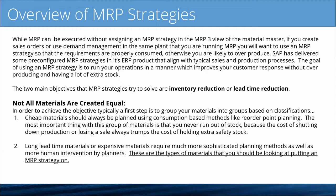Before we get started, what materials need an MRP strategy? Not all materials are created equal. To achieve the objective, a first step is to group your materials into groups based on classifications. The first type is what I call cheap materials — very inexpensive parts that you should always plan using a consumption-based method of MRP like reorder point planning. The most important thing with this type of material is that you never run out of stock, because the cost of shutting down your production line or losing a sale will always trump the cost of holding extra safety stock on parts like these.